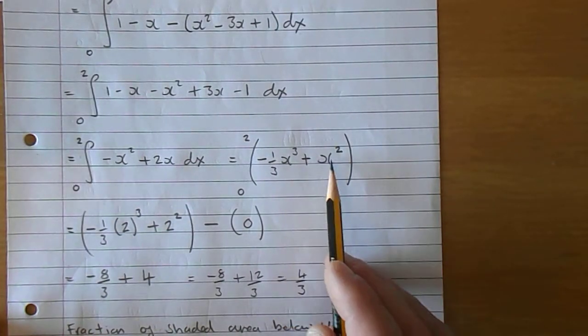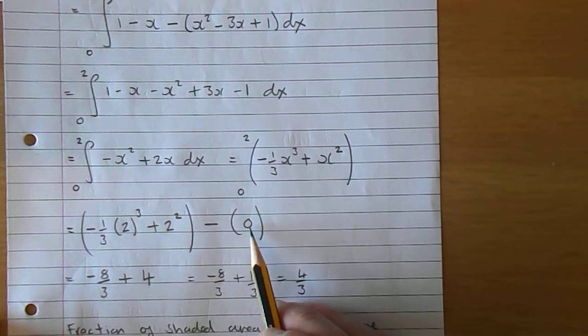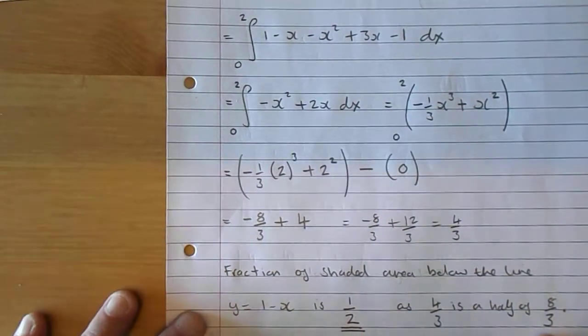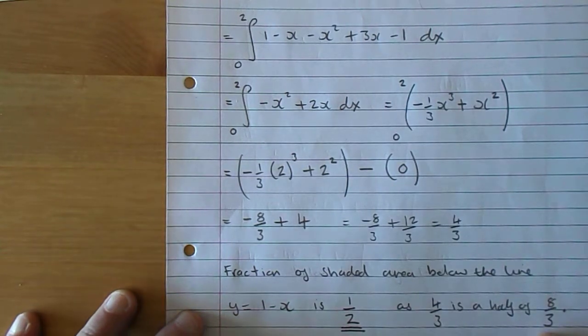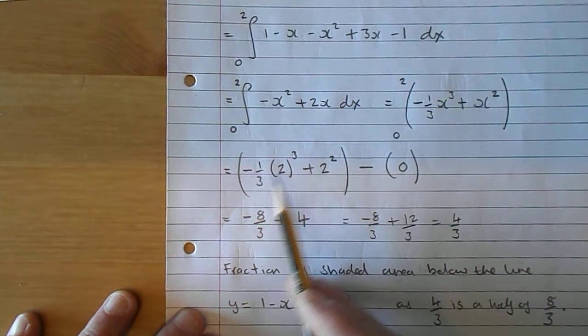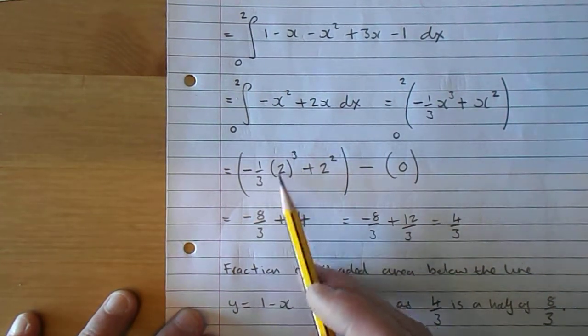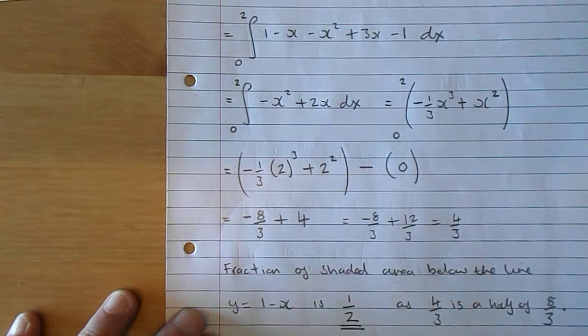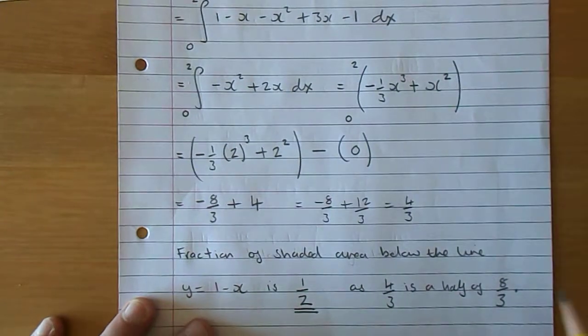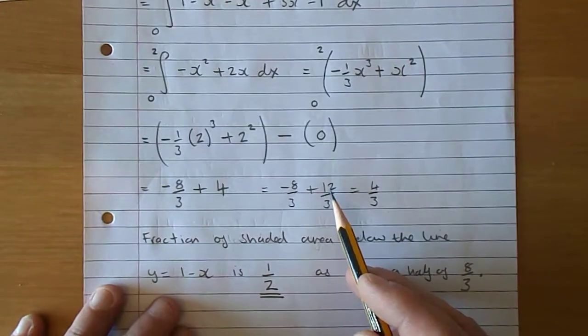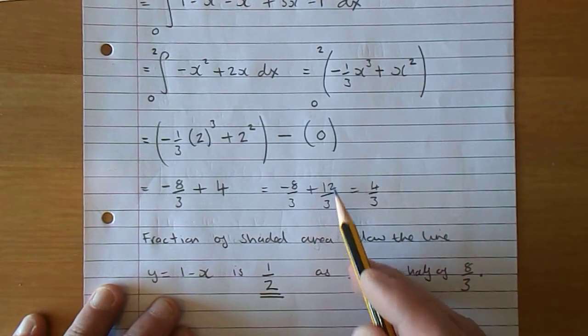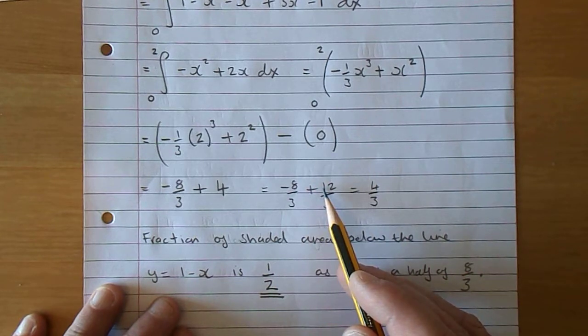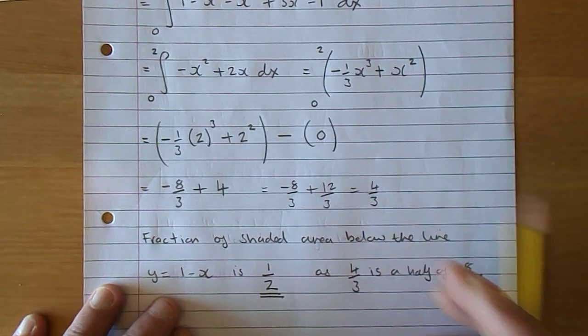We're now going to put 2 through it and the 0 through it, which again gives you 0. Let's see what we get when we put the 2 through it: negative 1 third times 2 cubed plus 2 squared. Negative 1 third times 2 cubed, 2 cubed being 8 again, so that's negative 8 over 3, plus 2 squared is 4. 3 4s are 12, so 4 is 12 thirds. Negative 8 add 12 is 4, so we have 4 thirds.